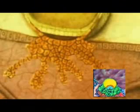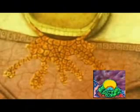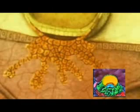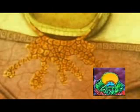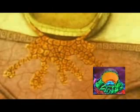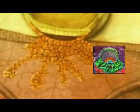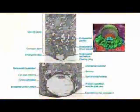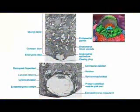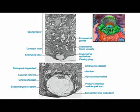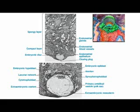This analogy is a very good one, since the blastocyst develops root-like structures called chorionic villi which derive oxygen and nutrients from the mother's blood, just as the roots of the plant shown here derive their nutrients from the soil.